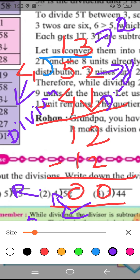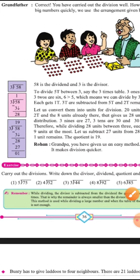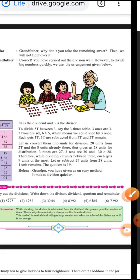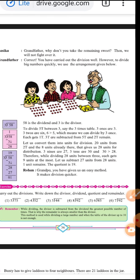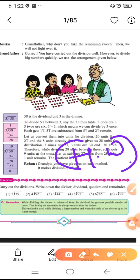Understood? Clear? The rest of the sums from page thirty-six you have to do as homework. Complete this page at home. I will be back with the next lecture. I hope you understood very well what division is and how it should be done. Carry on with all the sums and complete your work.